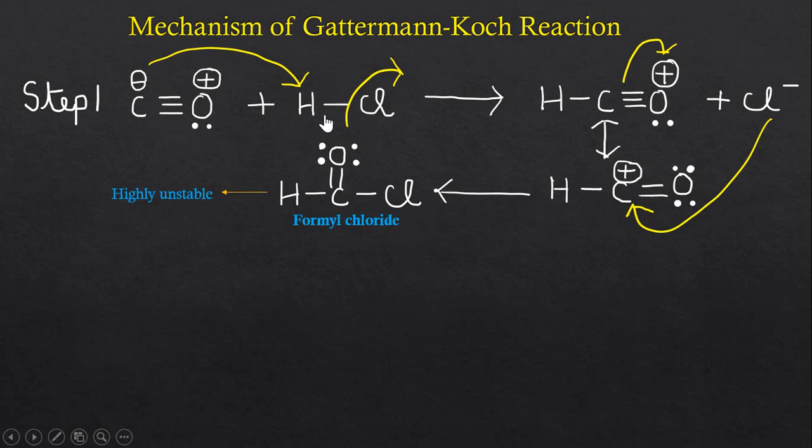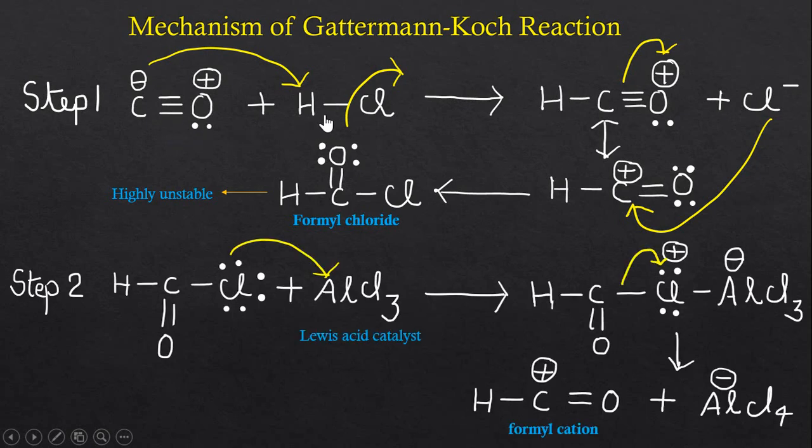Now in the next step, this Lewis acid catalyst AlCl3—here this aluminum atom of AlCl3 will accept lone pair of electrons from the chlorine atom of formyl chloride, and we will get this intermediate in which negative charge lies on the aluminum atom and positive charge lies on the chlorine atom.